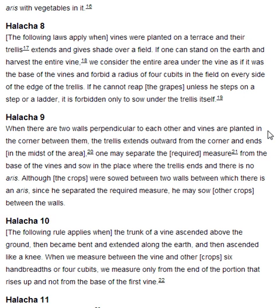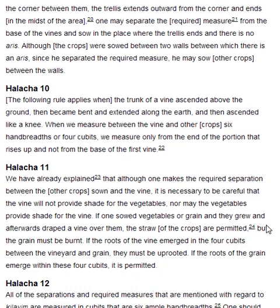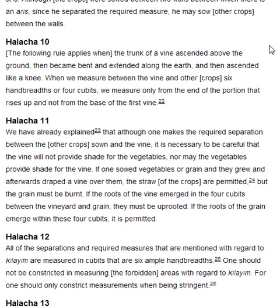Halakha 9. The following rule applies when the trunk of a vine ascended above the ground, then became bent and extended along the earth, and then ascended like a knee. When we measure between the vine and other crops — six handbreadths or four cubits — we measure only from the end of the portion that rises up and not from the base of the first vine.